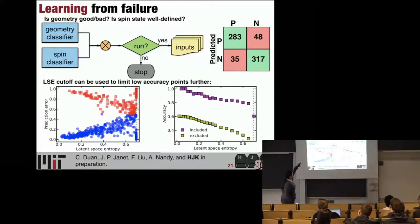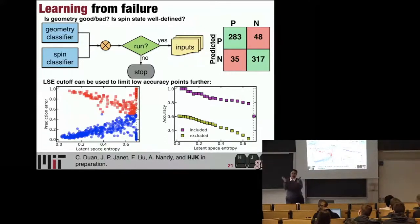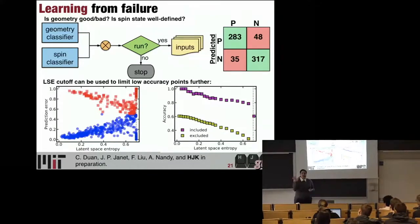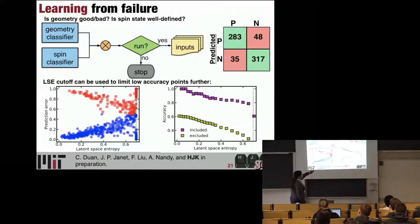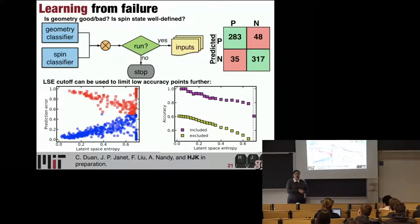We judge that two ways: one is whether the geometry is good, and will the optimization just fall apart or fail in some way? The other is whether we think the electronic state is faithfully described by a single DFT Kohn-Sham determinant. In doing so we're actually able to predict with about 90 to 95% accuracy when a calculation will give a good result. This moves us towards a new way of using machine learning for automation. We can also use uncertainty measures here — latent space entropy — that tells us when we should trust these classifiers to tell us whether or not to run a calculation.